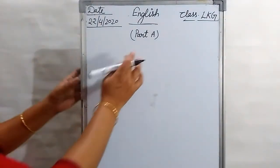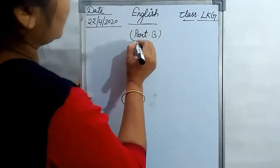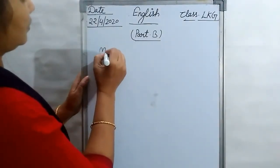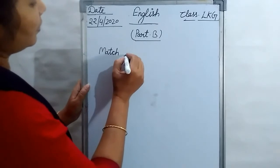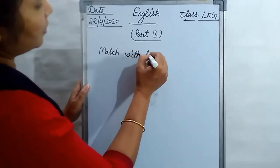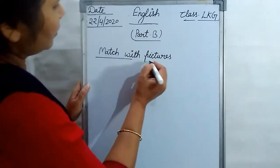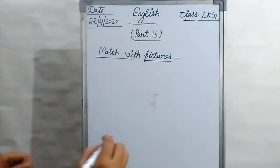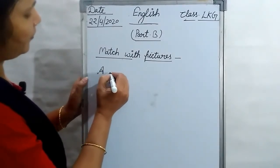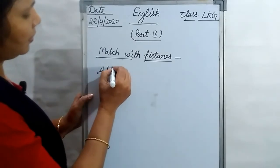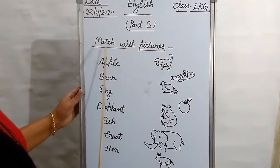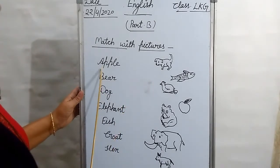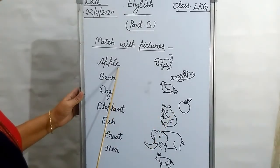Now, Part B — Matches. See these pictures. You have to match these pictures with correct spellings. A for apple. Where is the apple? Here. So you have to match with this apple.